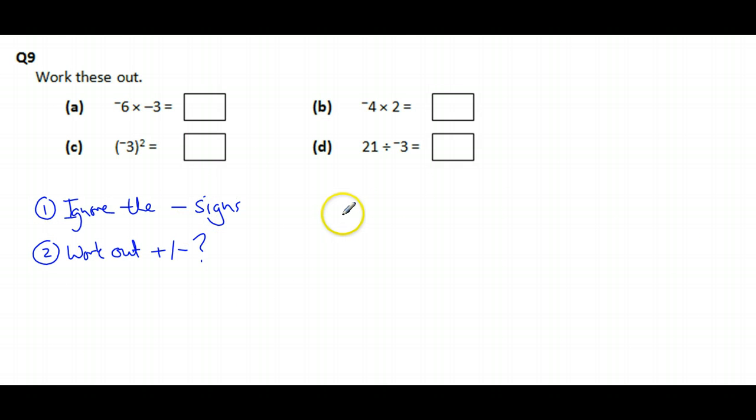Let's look at these. So for part A, let's do 6 times 3. That's going to give me the answer 18 if I ignore the minus signs. If I did minus 6 times 3, that gives me minus 18. And minus 6 times minus 3 ends up giving me plus 18.